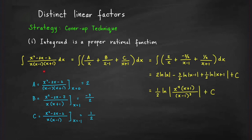For example, we are evaluating this integral. This is a proper rational function because the degree of the numerator is 2, the degree of the denominator is 3, and we have distinct linear factors: x, x minus 1, and x plus 1. The partial fraction decomposition is given by a over x plus b over x minus 1 plus c over x plus 1, where a, b, and c are real constants.